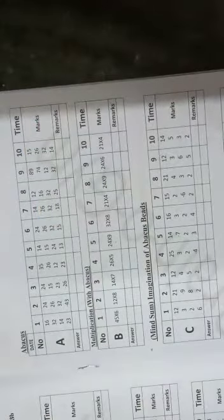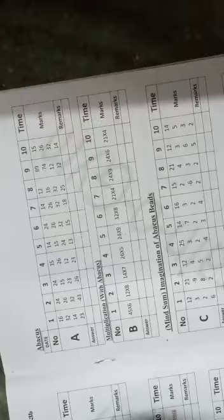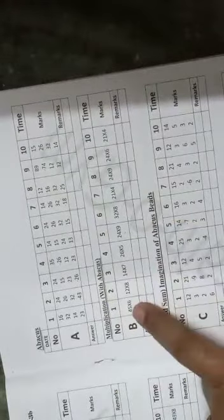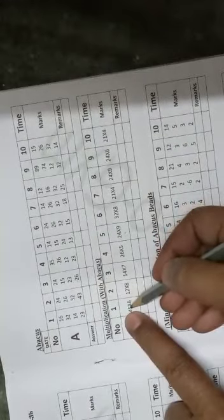So your answer is 39. Write down your answer. Column C/B, first question: multiplication with the abacus. 5 times 6 is 30, so we write here 0 and 3 carry forward.